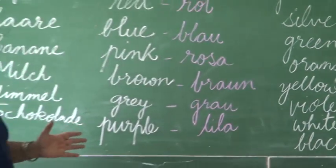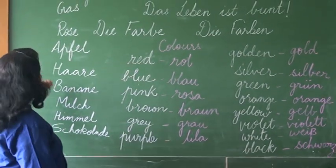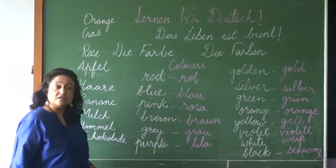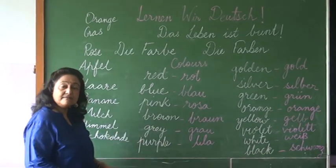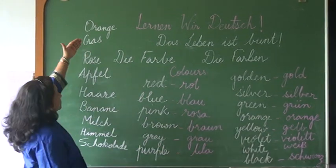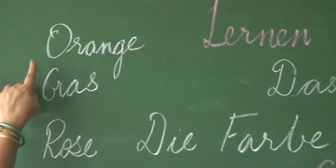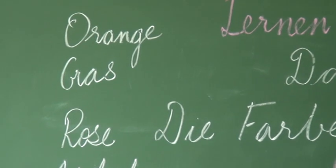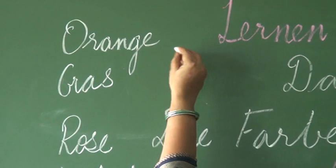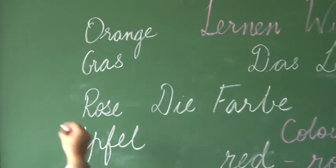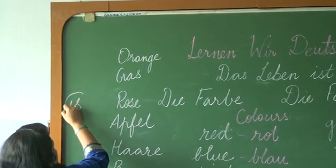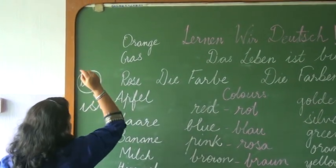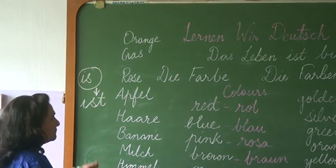So those were the basic colours which you need to learn and keep in mind. Now next, I want you all to learn some words which we can connect with the colours. For example, orange — the colour of the orange fruit is orange. In German, 'is' is known as IST. IST is the helping verb for 'is.'